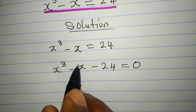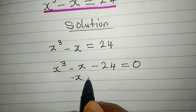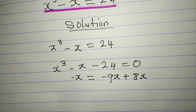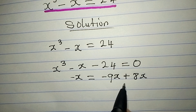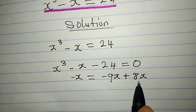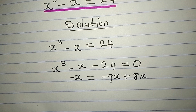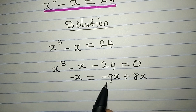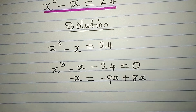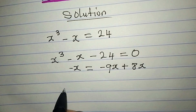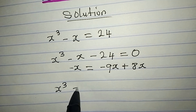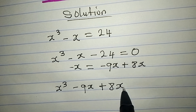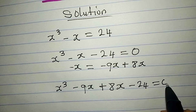This minus x here — I want to use it as minus 9x plus 8x. I brought this out because I know that this 8x and 24 have something in common, and we can break it down to factorize x to the power of 3 and minus 9x. So in place of x³ we come down, then minus 9x, then plus 8x, then minus 24, and this equals 0.